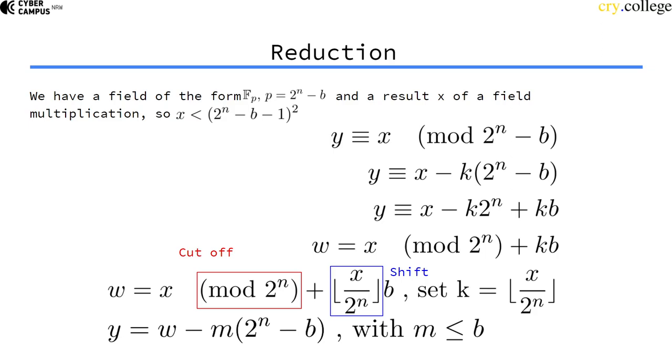So x divided by 2^16, for example, would just be x right shifted by 16 bits. So we have cutoff and we have a shift, which are both very cheap operations.